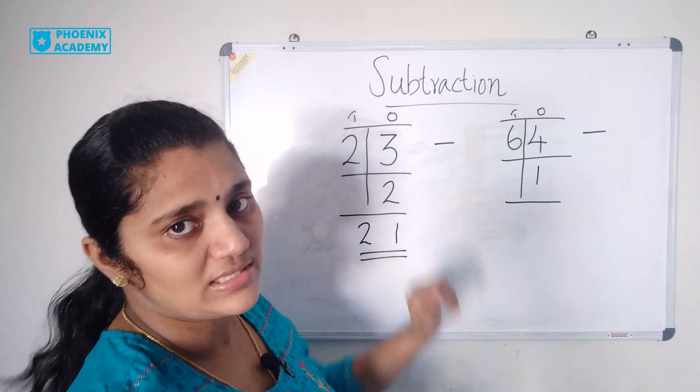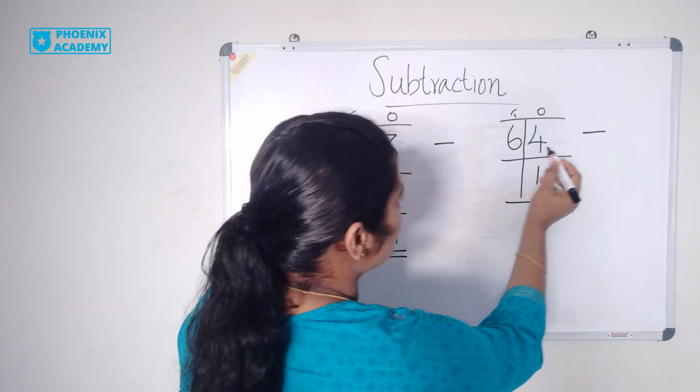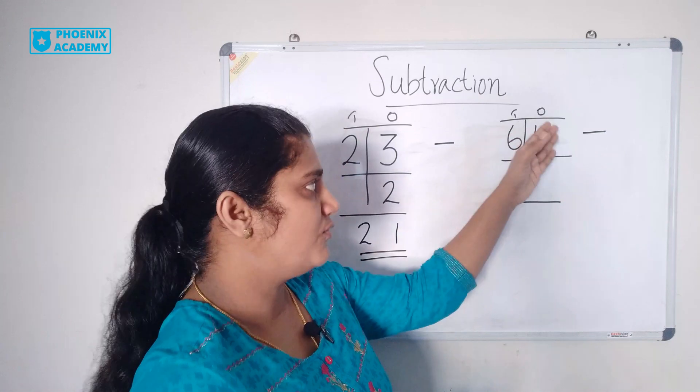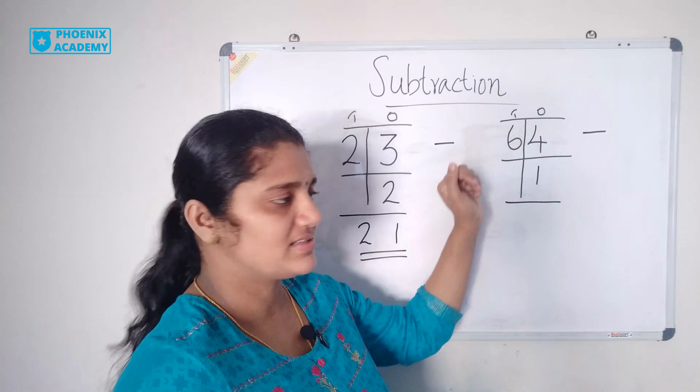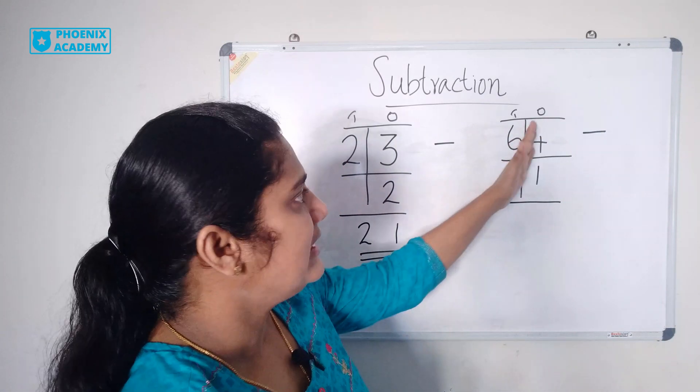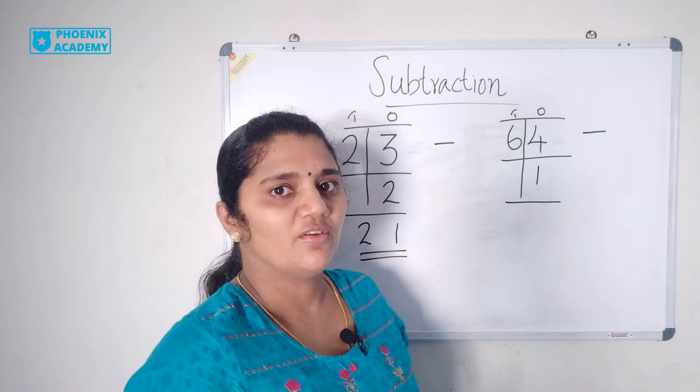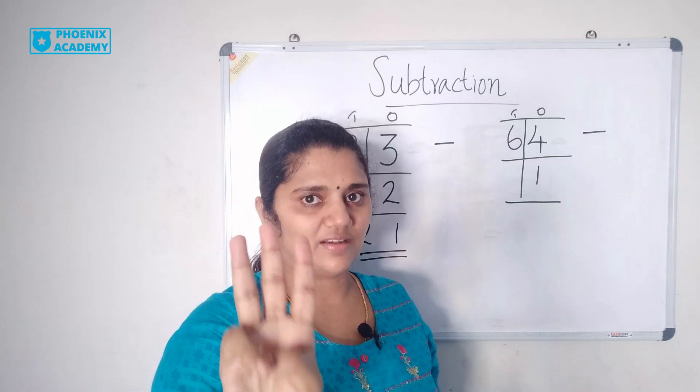Let's do this also. 64 minus 1. 64 is 4 ones and 6 tens. Let's subtract ones first. 4 minus 1. 4 minus 1 is 3.